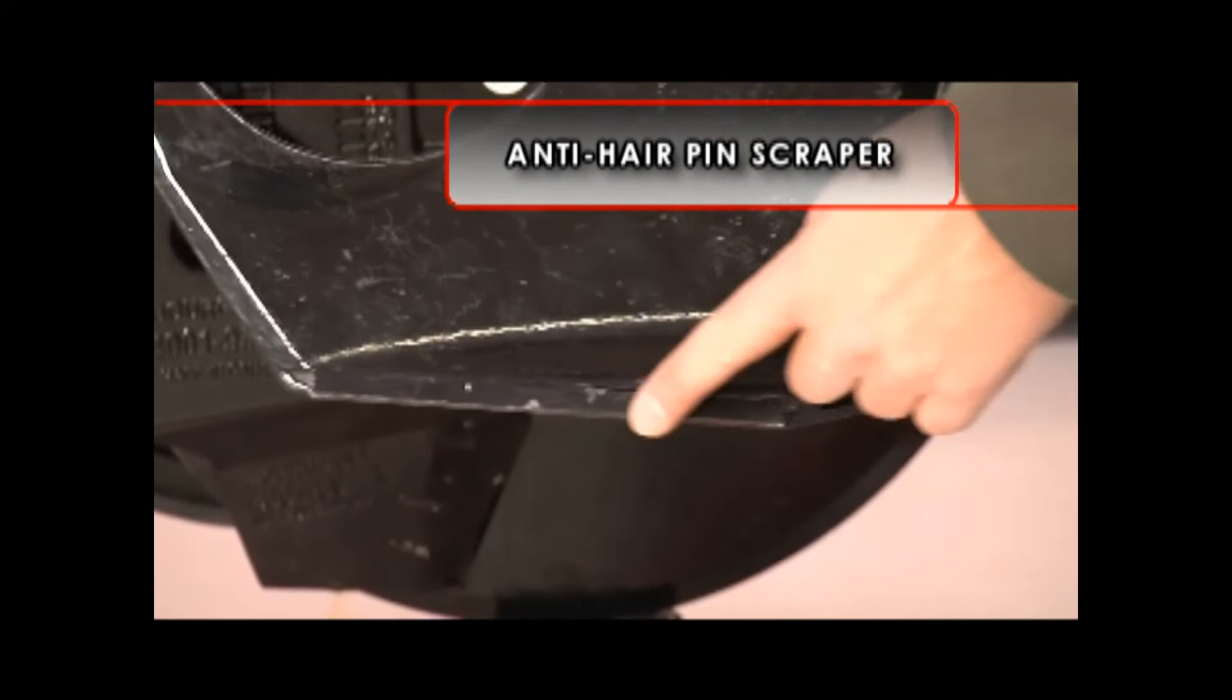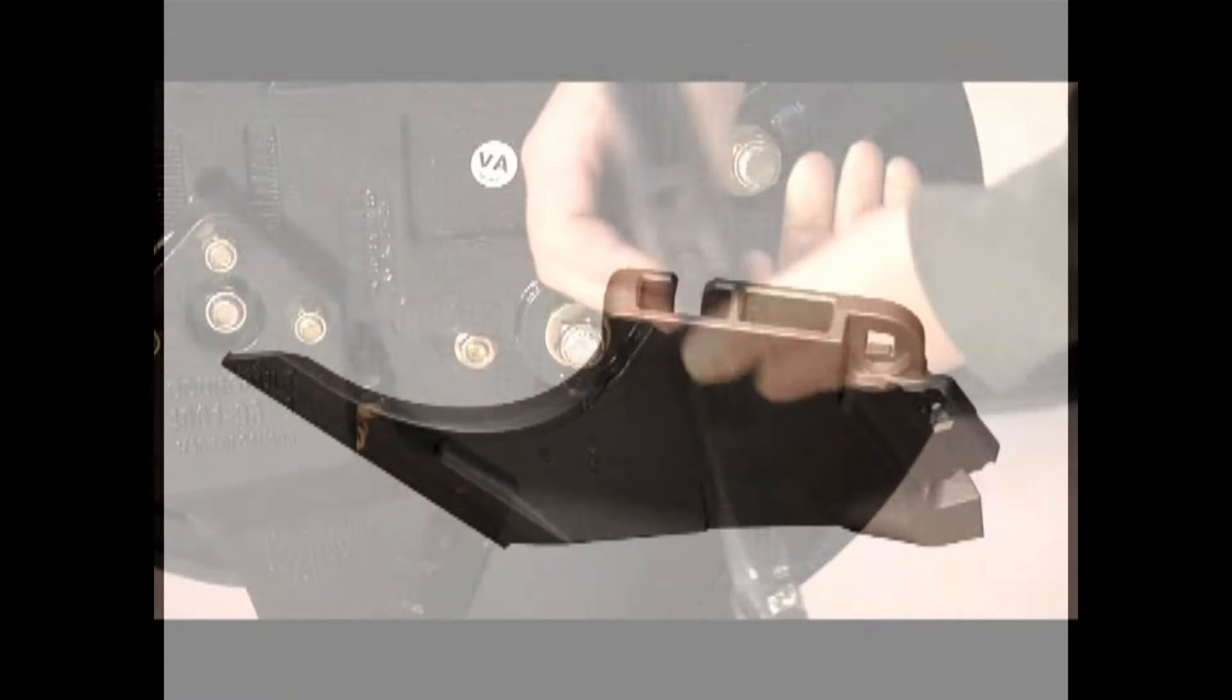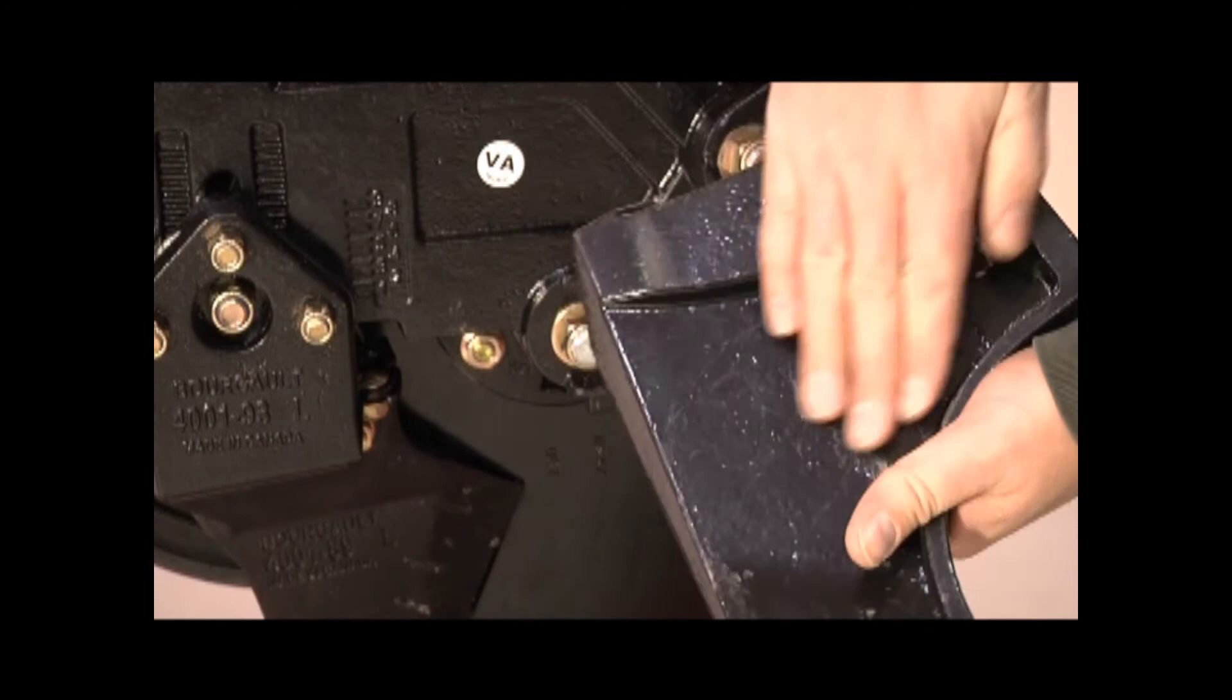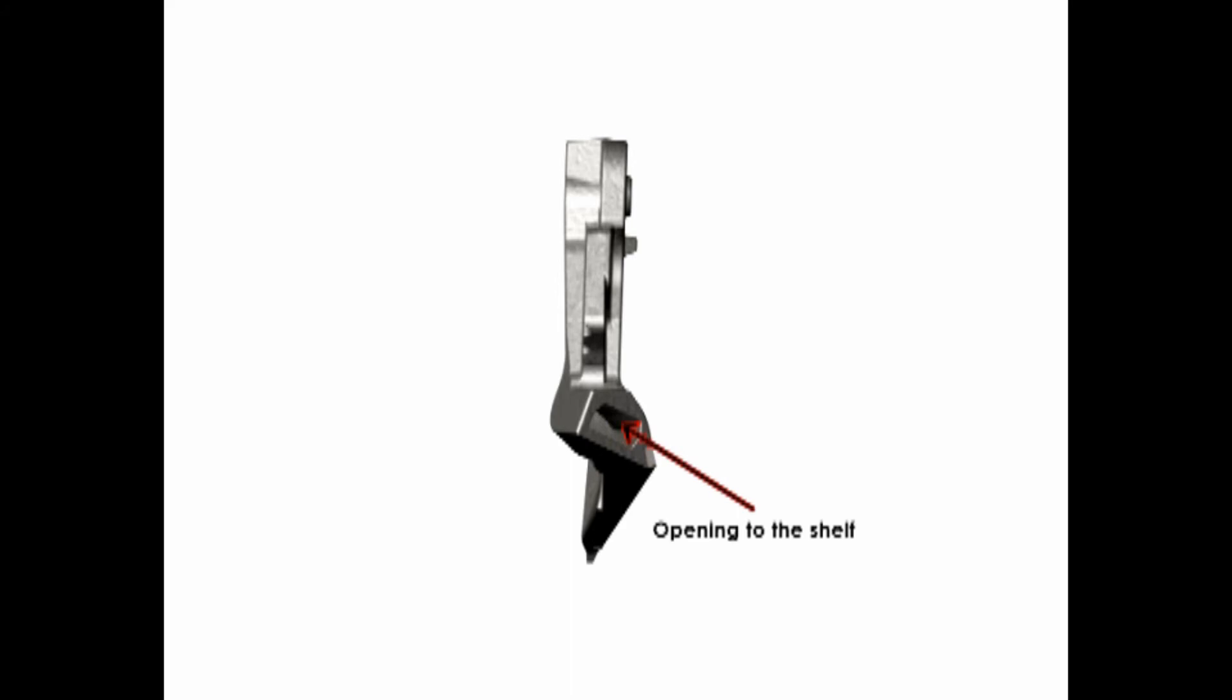The anti-hairpin scraper is the choice if you are dealing with heavy residue conditions. This scraper will provide penetration through challenging field materials such as corn stalks or wheat straw, yet provide an excellent seed bed without hairpinning into the seed row. It also is capable of directing another product to the side of the initial seed row for increased seed bed utilization or the placement of starter fertilizer in close proximity to the seed.